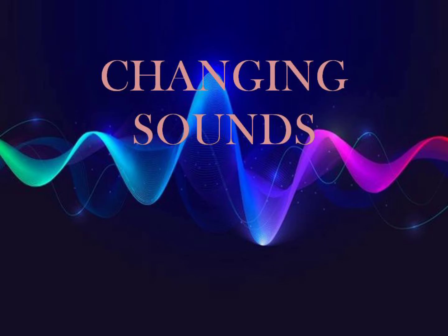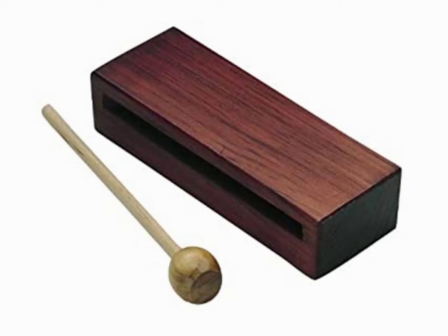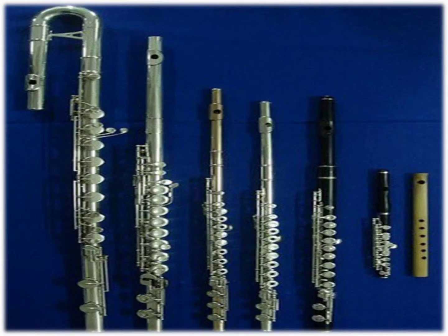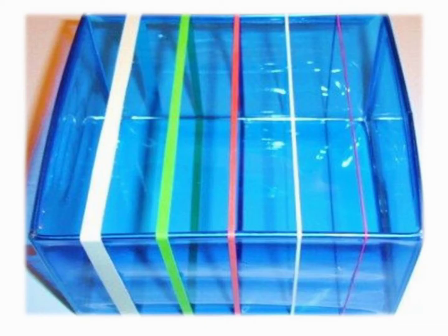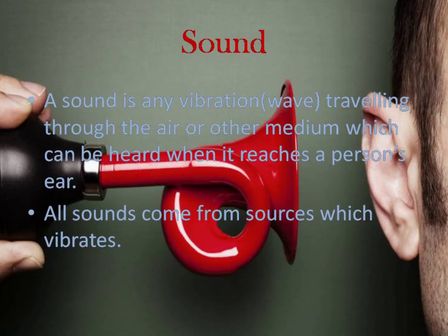We can make a sound by hitting a box with a stick, blowing into a tube, plucking a rubber band, etc. Let us now look at the definition of sound. A sound is any vibration traveling through a medium which can be heard when it reaches a person's ear. All sounds come from sources which vibrate.